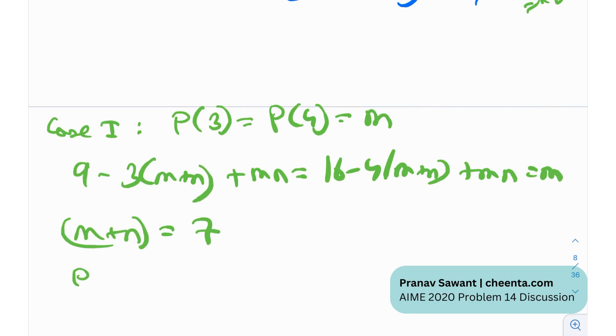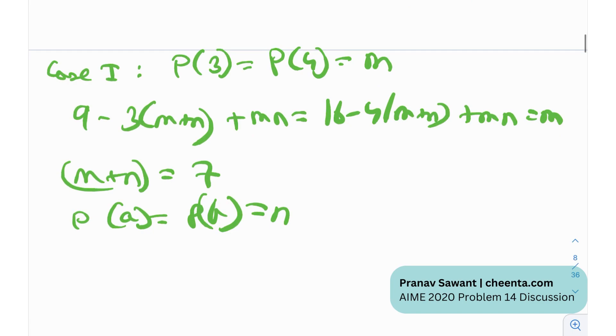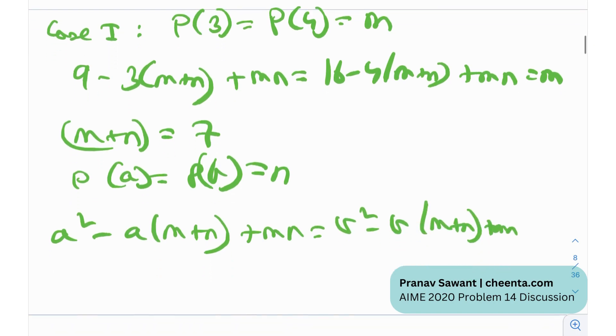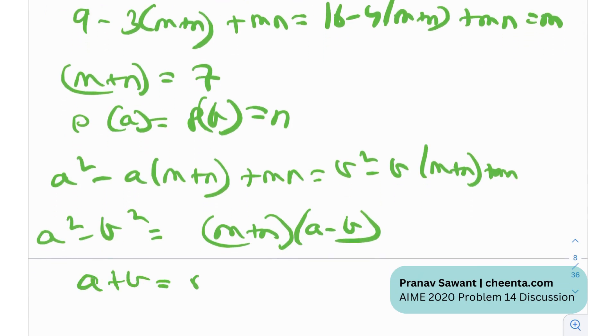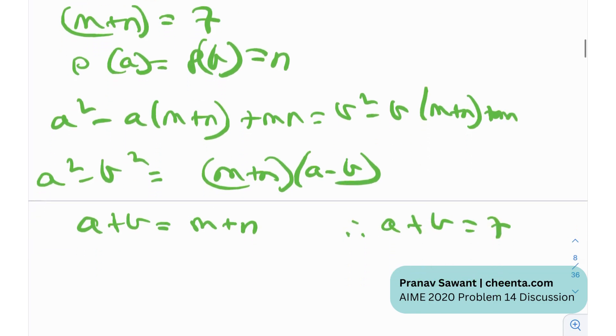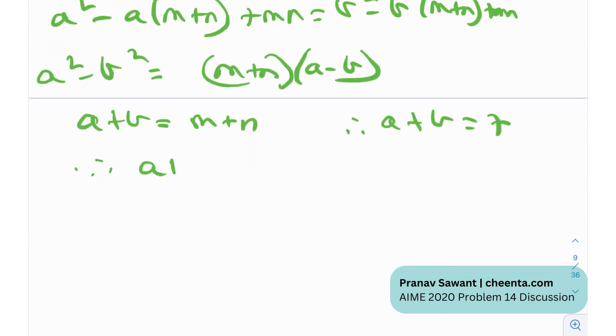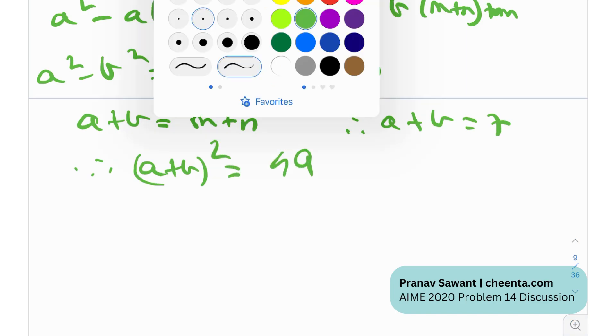And also I had p of a equals p of b equals n. In other words, I have a squared minus a times m plus n plus mn equals b squared minus b times m plus n plus mn. I can just simplify this as a squared minus b squared equals m plus n times a minus b. So essentially that leaves us with a plus b equals m plus n, and since m plus n was 7, a plus b equals 7, and therefore a plus b whole squared equals 49. So we got one value of a plus b squared in this case.